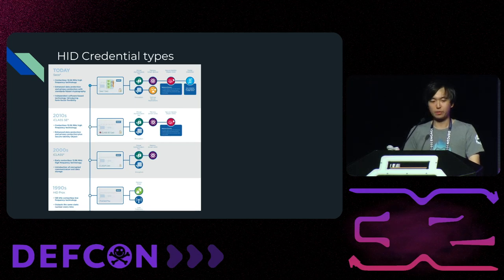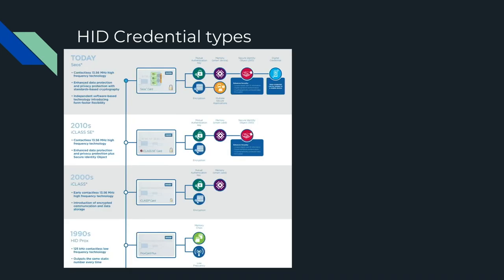Here is an overview of all the different HID credential types, starting with Prox — a low frequency credential that's a bit out of scope for today's topic. Moving to around 2000, we have iClass Legacy, which was unique because it was encrypted with a 64-bit key. These were broken in 2010 by Milos Meryak during the Heart of Darkness attack, where two readers were destructively attacked to dump firmware and derive the master authentication keys. Going into the 2010s, we have iClass SE, also known as SIO-enabled, with SIO meaning Secure Identity Object. iClass SE is still the flagship credential from HID today.